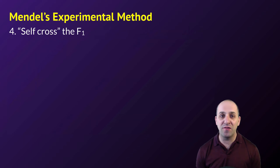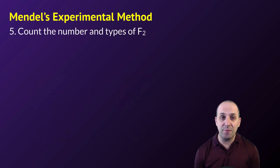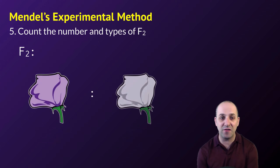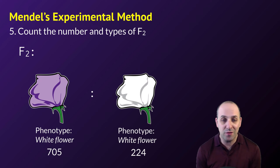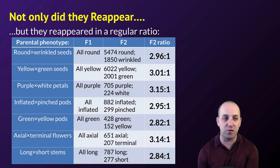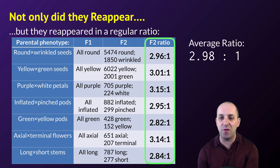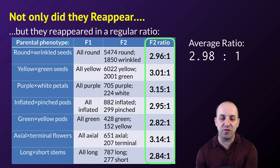Then he took the F1s and mated them with themselves. Crossing two purple flowers from the F1 generation, he counts the number and types of F2s. What he finds is that the white flowers come back, which is pretty interesting. That white trait is reappearing — and he notes this in every phenotype. The phenotype that disappeared in the F1 always comes back in the F2, and not only does it reappear, but it reappears in a regular predictable ratio. Looking at his actual data for seven traits, the ratio is always around 3 to 1. The average is 2.98 to 1 — not exactly 3 to 1, but really close.